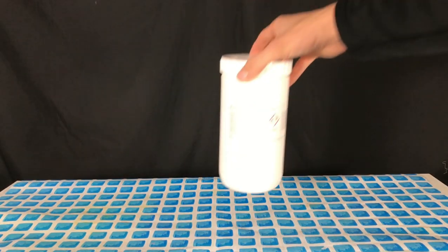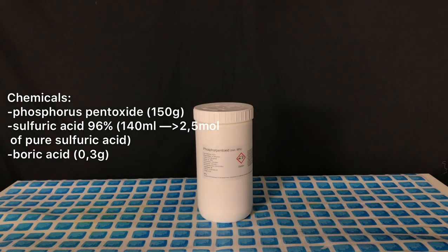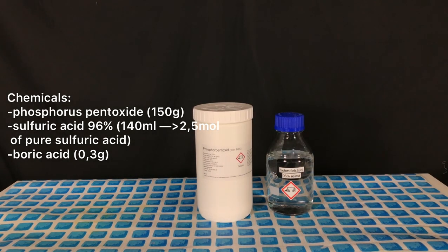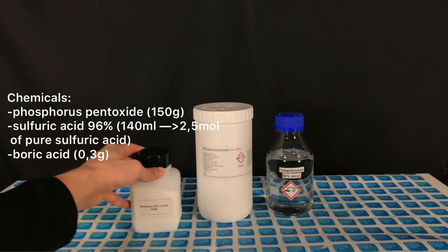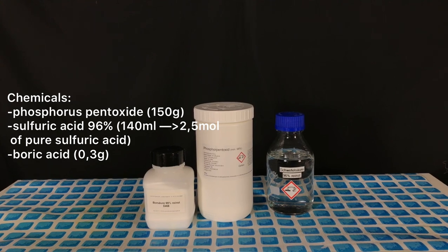Welcome back everyone. Today we are going to make some sulfur trioxide. For this, 150 grams of phosphorus pentoxide, which represents a huge excess, 140 milliliters of 69% sulfuric acid, which contain 2.5 moles of pure sulfuric acid, and 0.3 grams of boric acid or another polymerization inhibitor are needed.